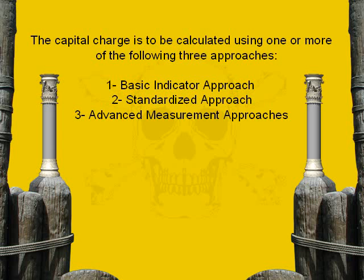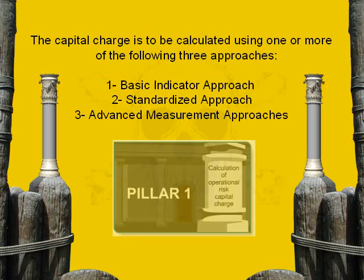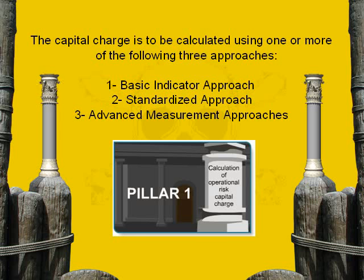Since we agreed that we are going to discuss Basel II in a step-by-step process, we are now going to talk a little bit more about Pillar one. Under Pillar one, the capital charge for operational risk is calculated using one or more of the following three approaches.